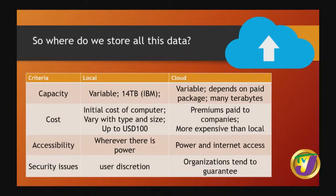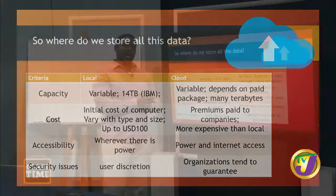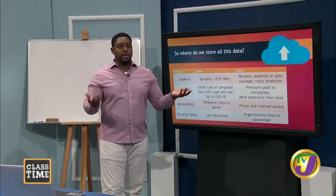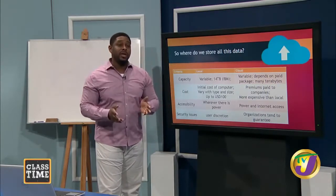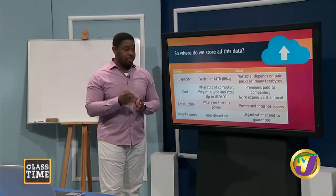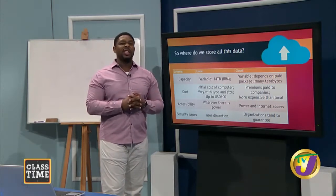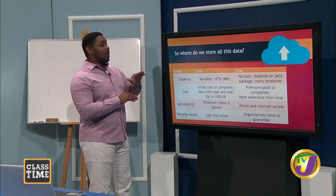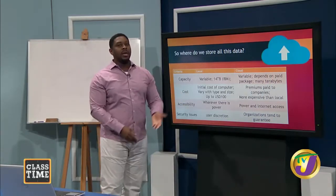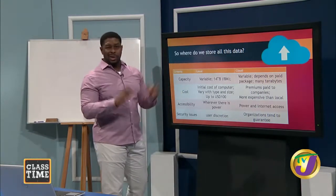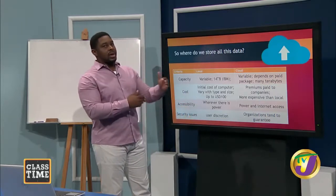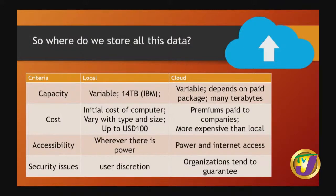Google offers about four different paid packages — roughly two cents per gigabyte per month. There's also another service that gives 10 gigabytes free with payments around $9.99 or $24 per month. In terms of accessibility, local storage just requires power, while cloud requires both power and internet access — an additional cost. Security-wise, paid cloud services tend to guarantee some security level.